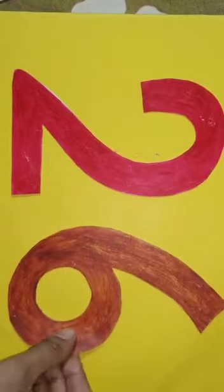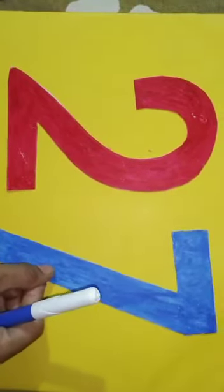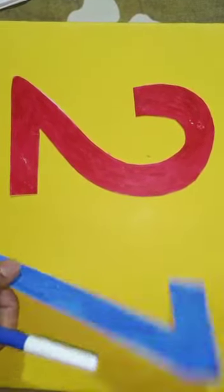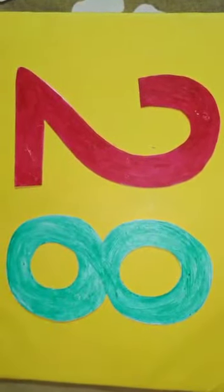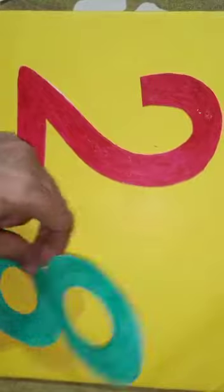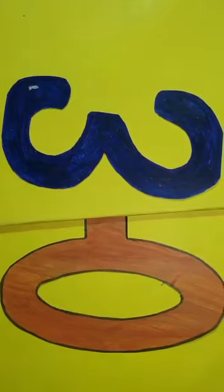this is 26, 2, 6, 26. 2, 7, 27. 2, 8, 28. 2, 9, 29, and after 29 comes 3, 0, 30. 3, 0, 30, ok?